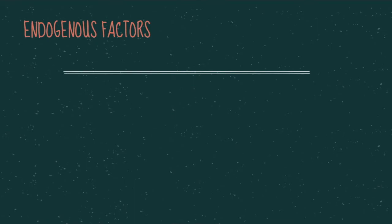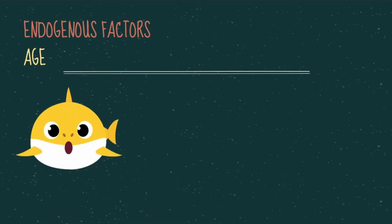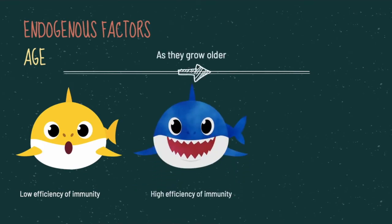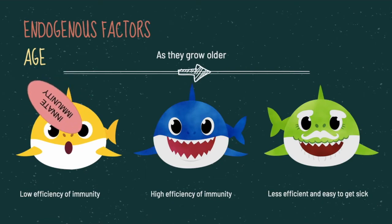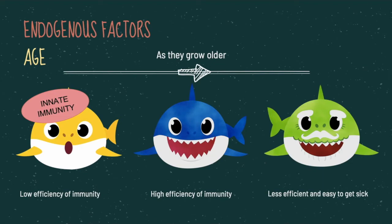One endogenous factor is the age of a fish. When a young fish starts to develop, its immune system has low efficiency compared to an adult fish. As they grow older, their immune system becomes less efficient and they tend to get diseases more often. Notably, innate immunity tends to develop earlier compared to adaptive immunity.